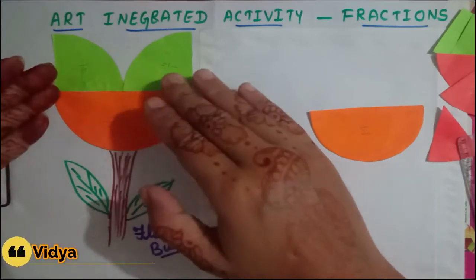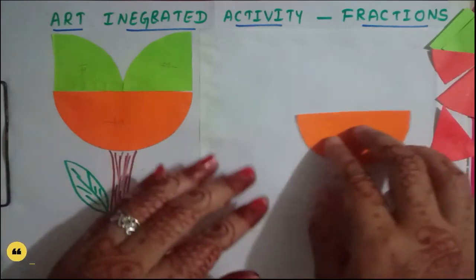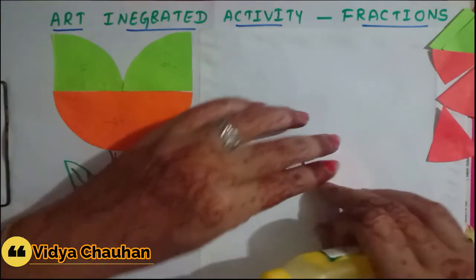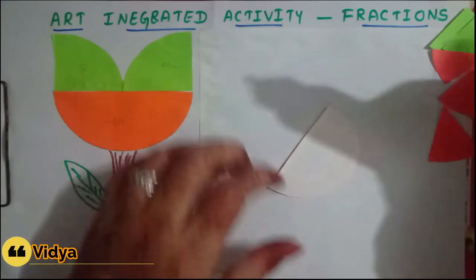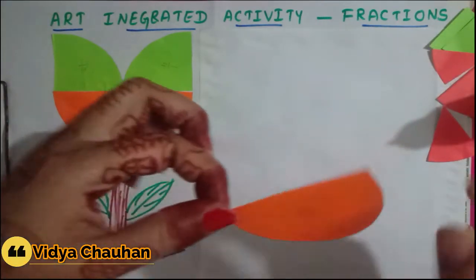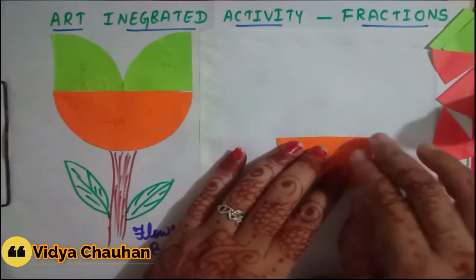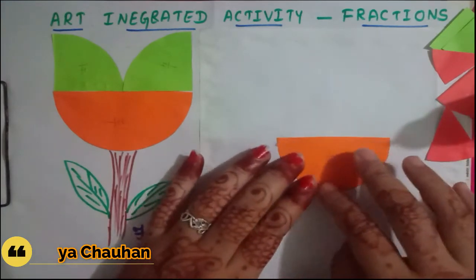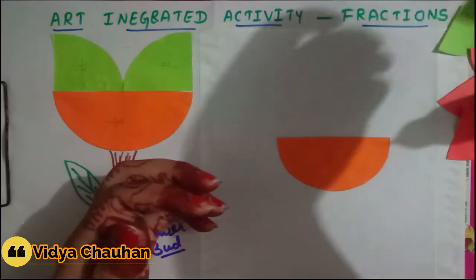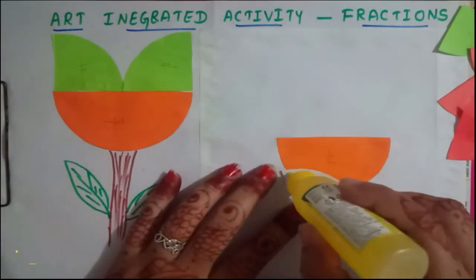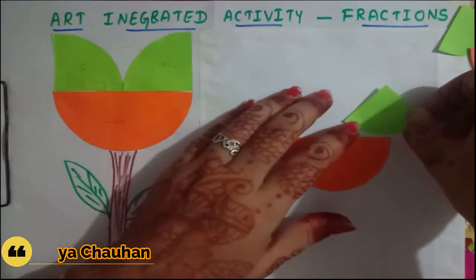Now we are going to use the one eighth pieces too. Using the remaining fractions, I will show you how to make a beautiful bird. The half fraction will represent the body or trunk part of the bird. For the head part, I am going to use the fraction one upon four and paste it like this.